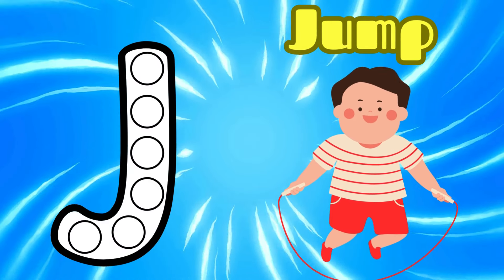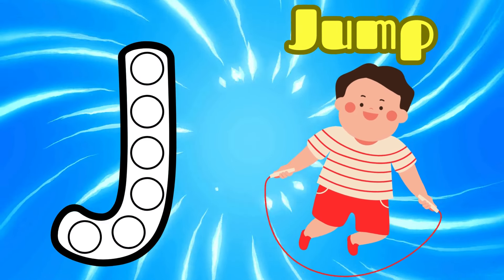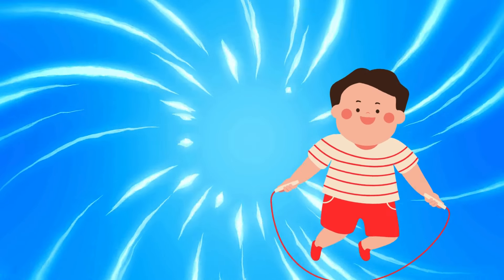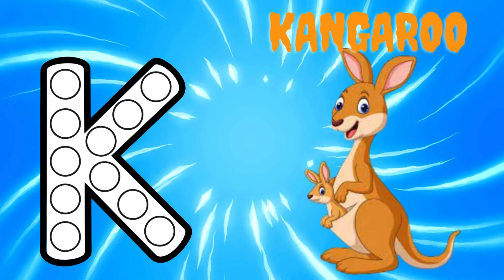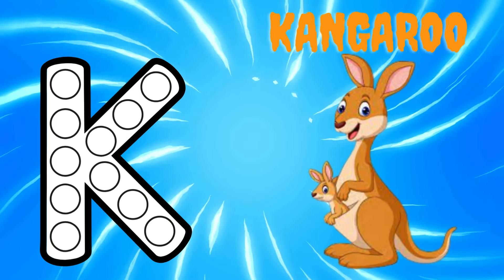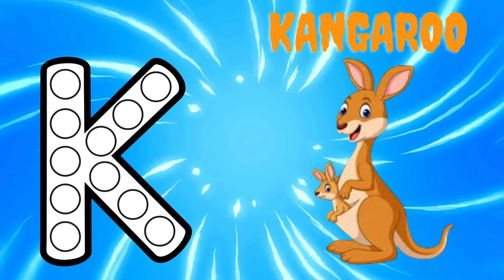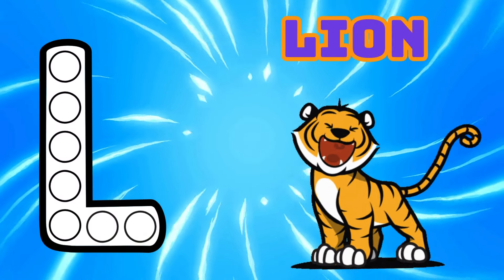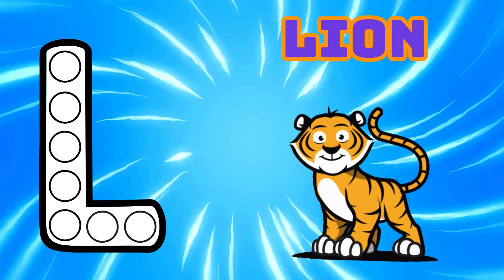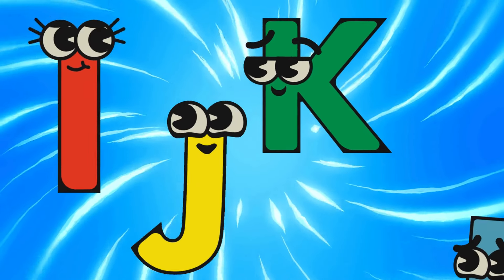J is for Jump, J-J-Jump. K is for Kangaroo, K-K-Kangaroo. L is for Lion, L-L-Lion.